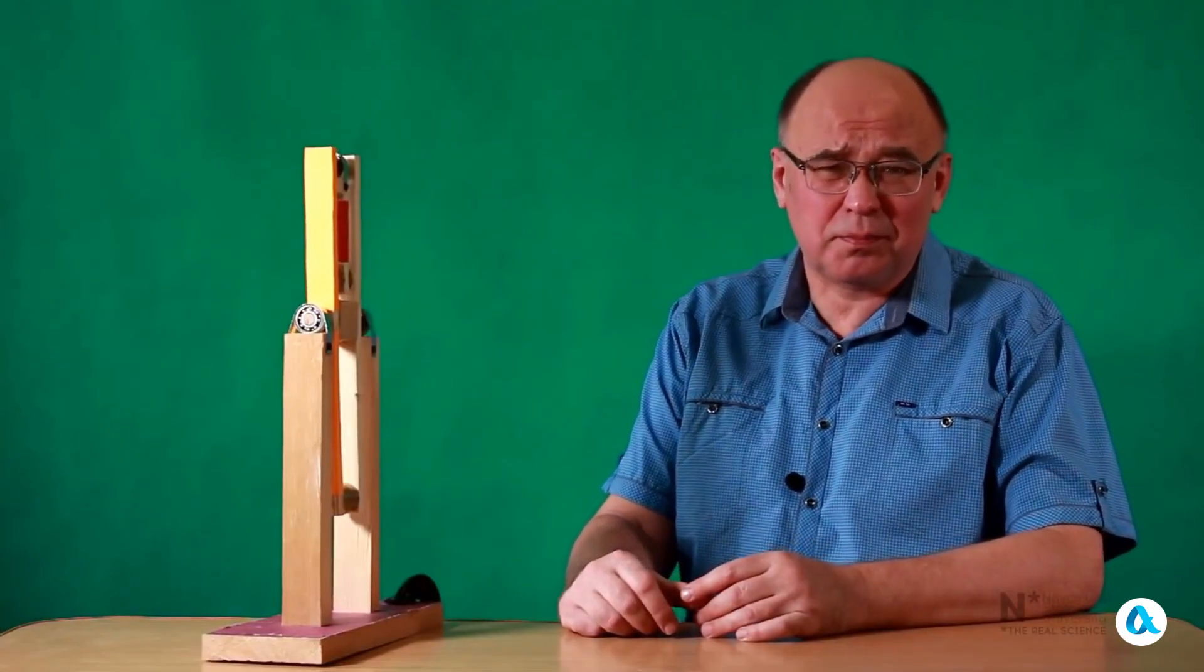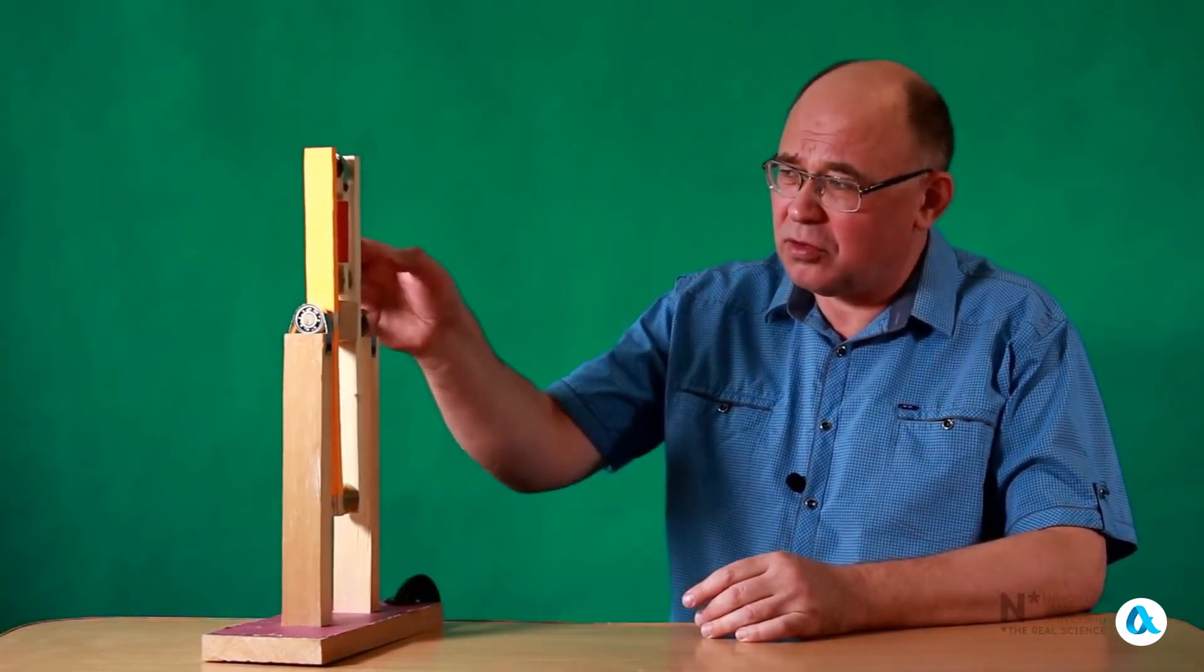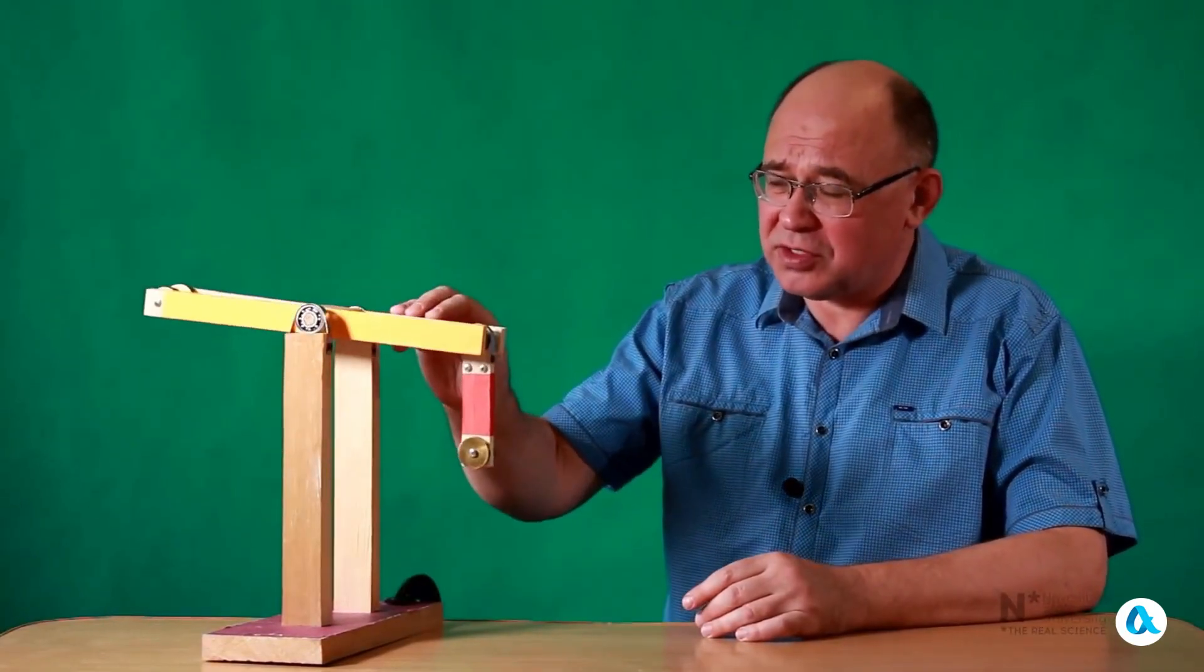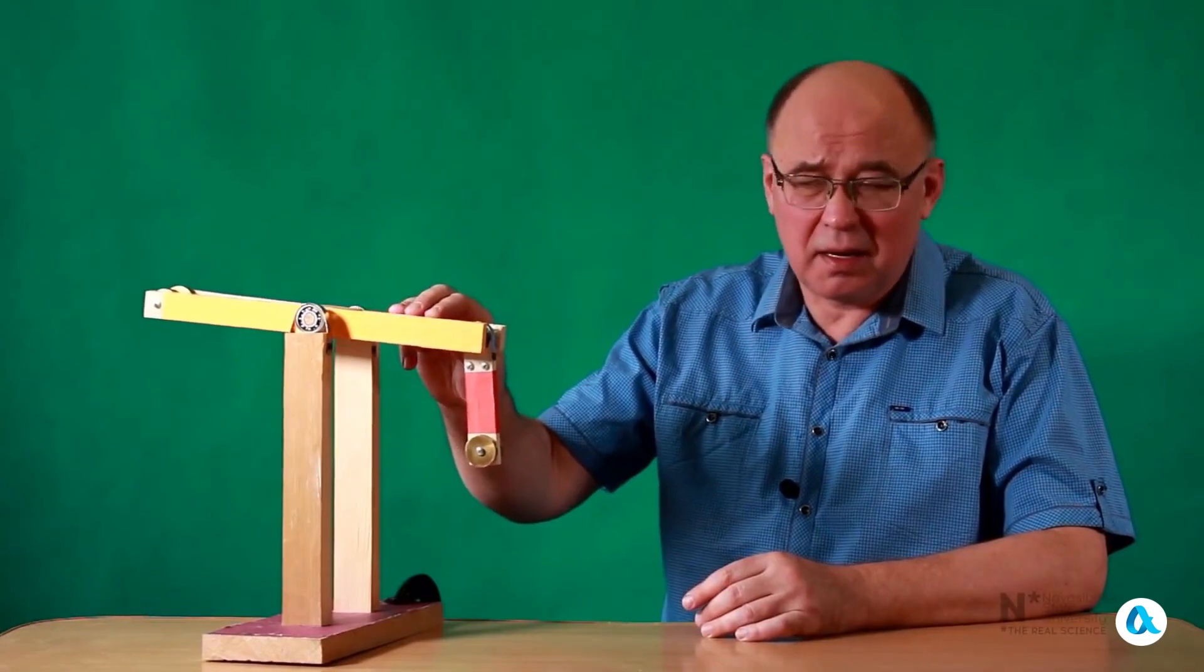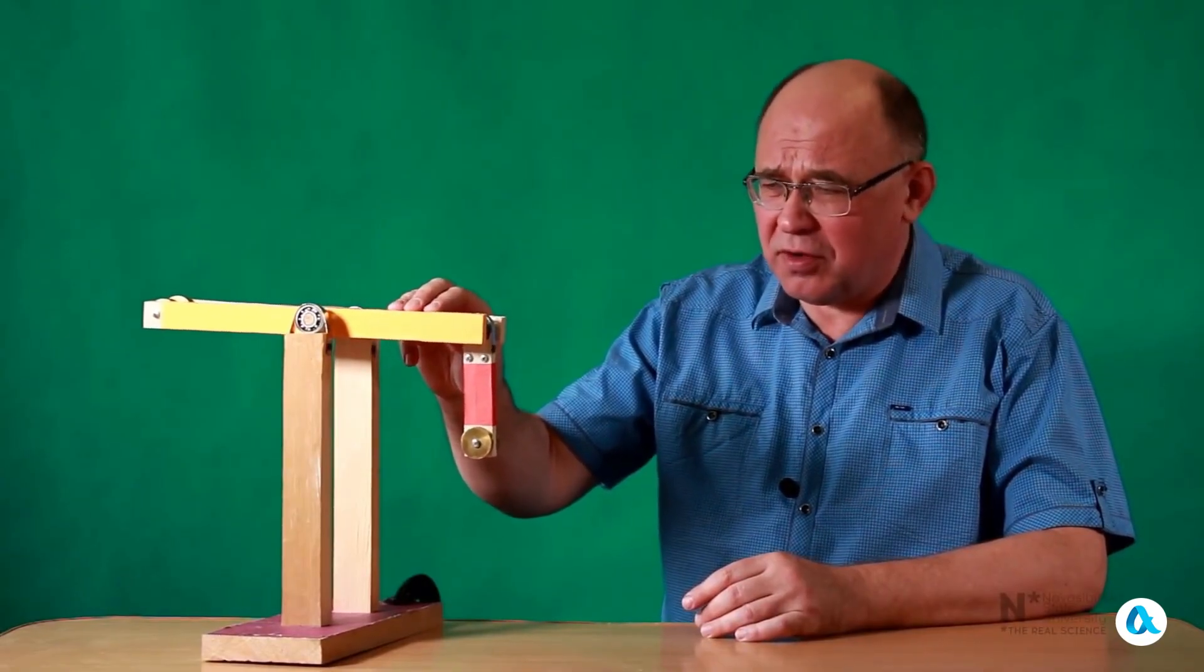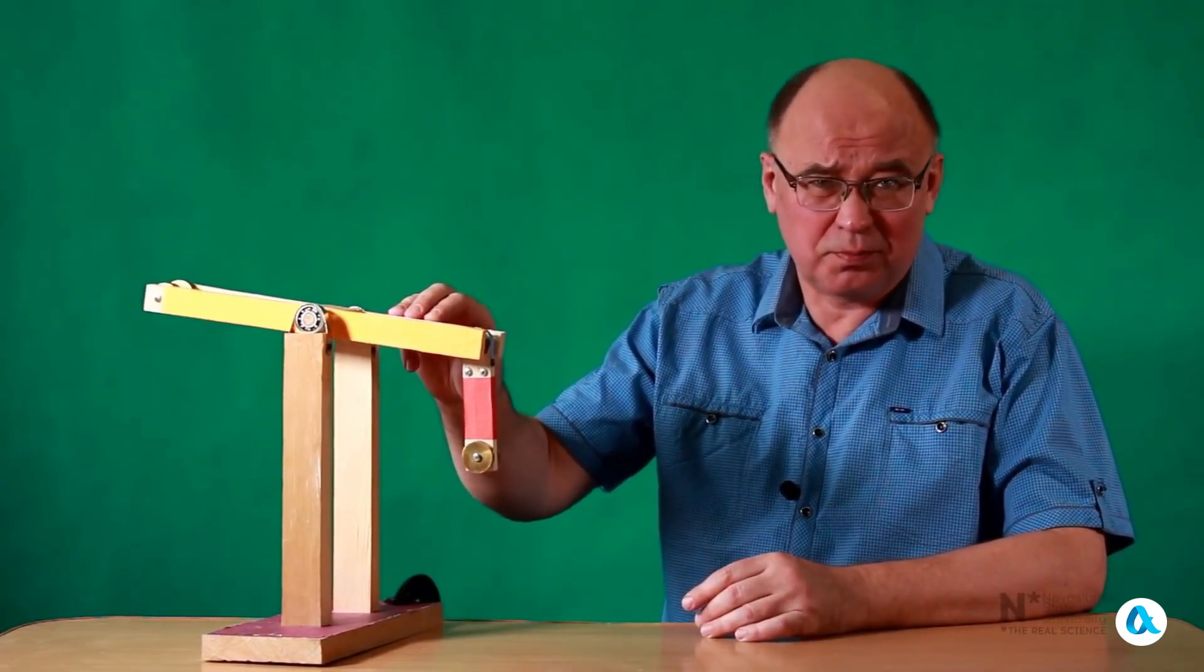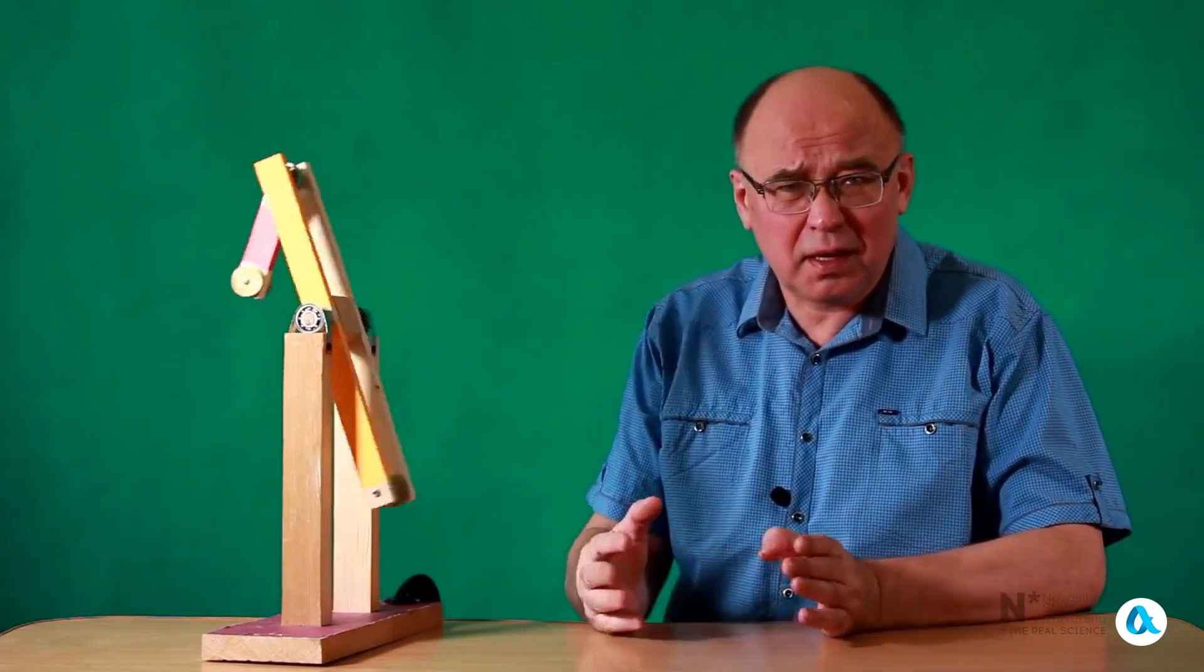The device on my desk is a type of double pendulum. The axis of the first pendulum is mounted on supports, while the axis of the second pendulum is attached to the frame of the first pendulum. This device is interesting because it performs many different types of movements, which is what we will be discussing today.